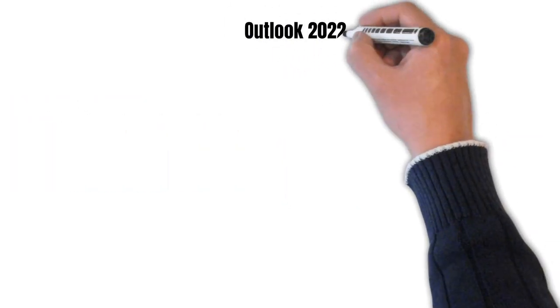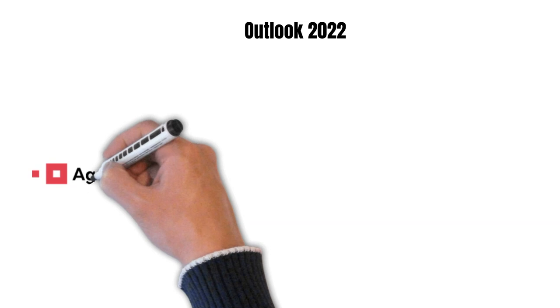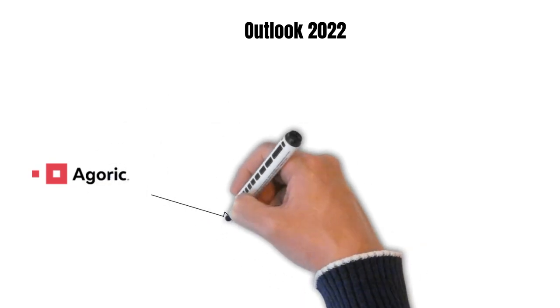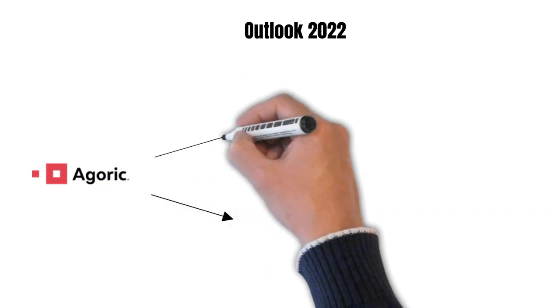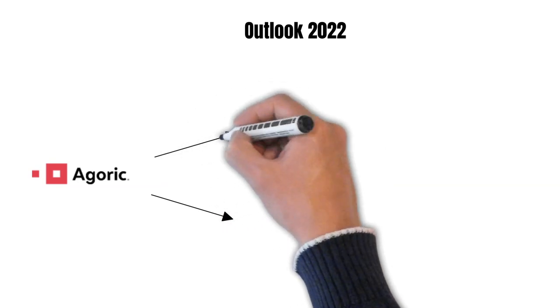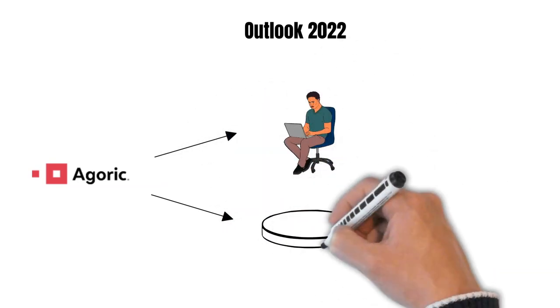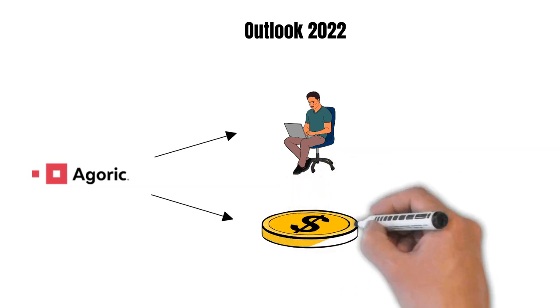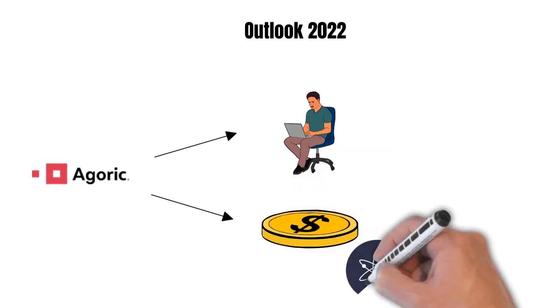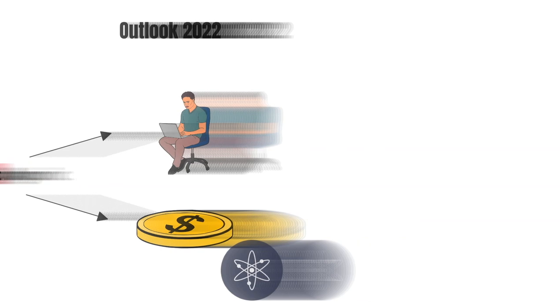2022 is going to be a big year for Agoric. I expect Agoric to become one of the most important chains in the Cosmos ecosystem. Agoric will contribute to bringing more Web2 developers into the space. And with the RUN protocol, Cosmos will have a native stablecoin, which is absolutely crucial for its long-term success.